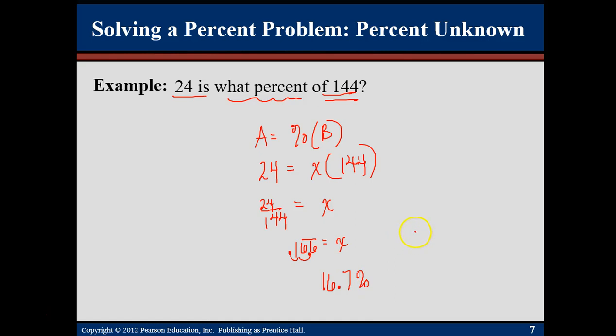Now 16.7 percent is less than 20 percent. If 10 percent of 144 is 14.4, then two times that, 20 percent, would have to be 28.8. Well, 28.8 is bigger than the 24, and 20 percent is bigger than the 16.7 percent. So it kind of makes sense.